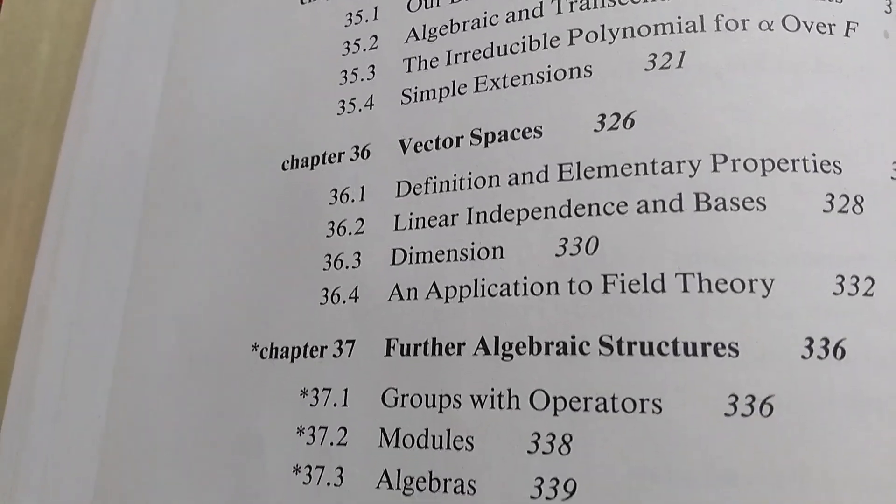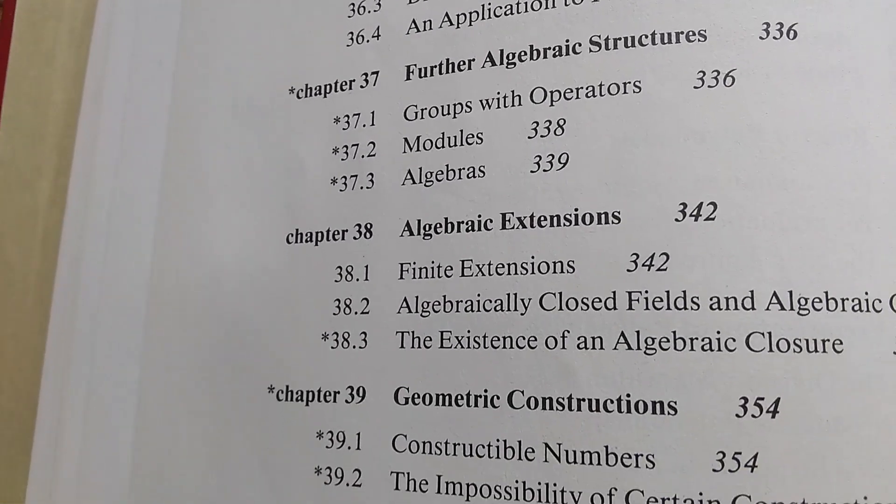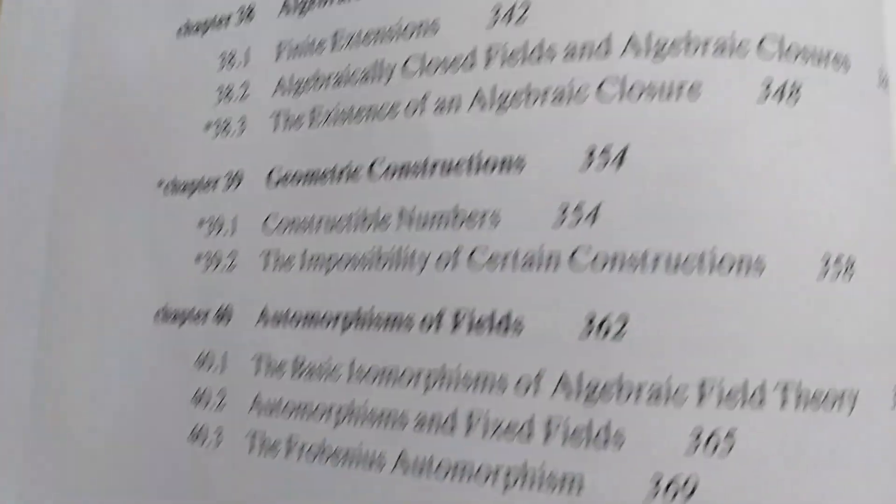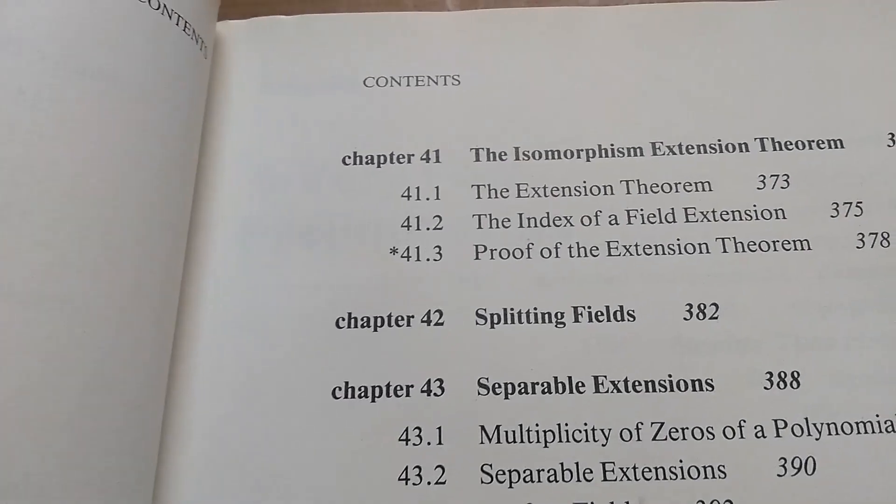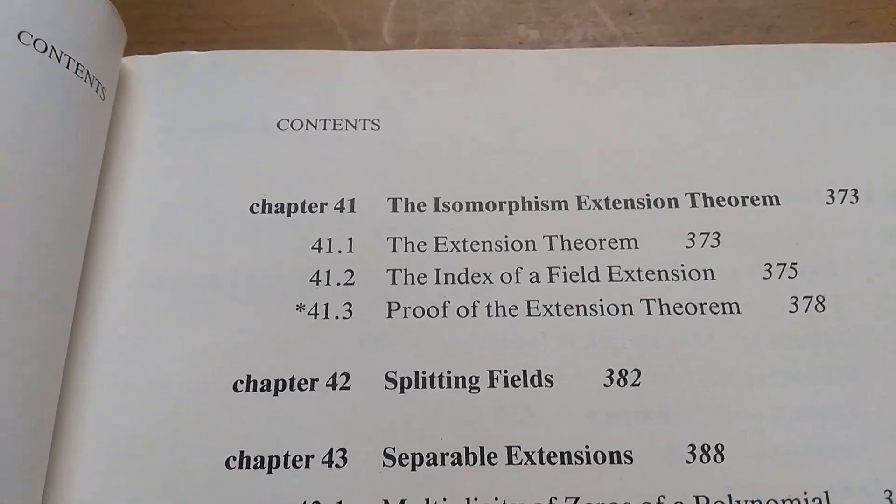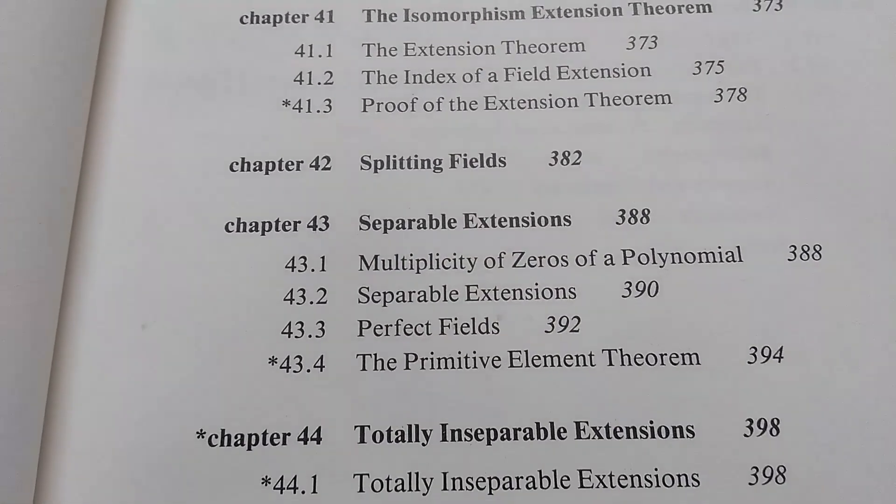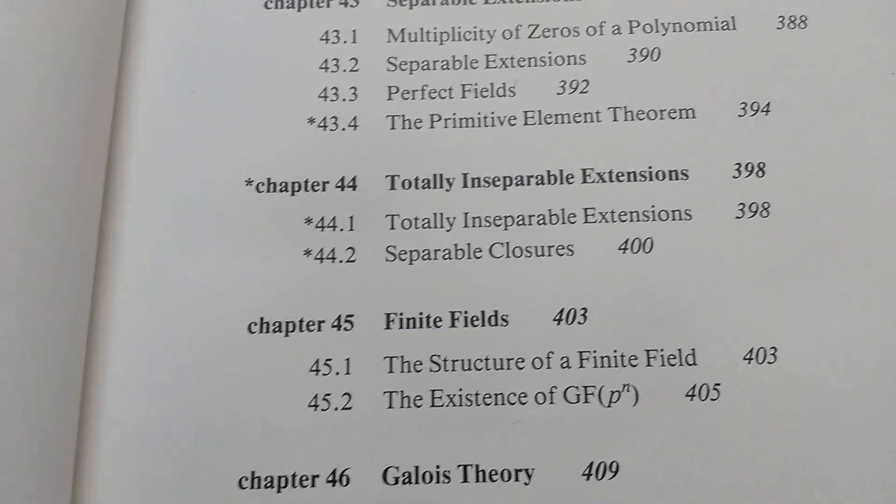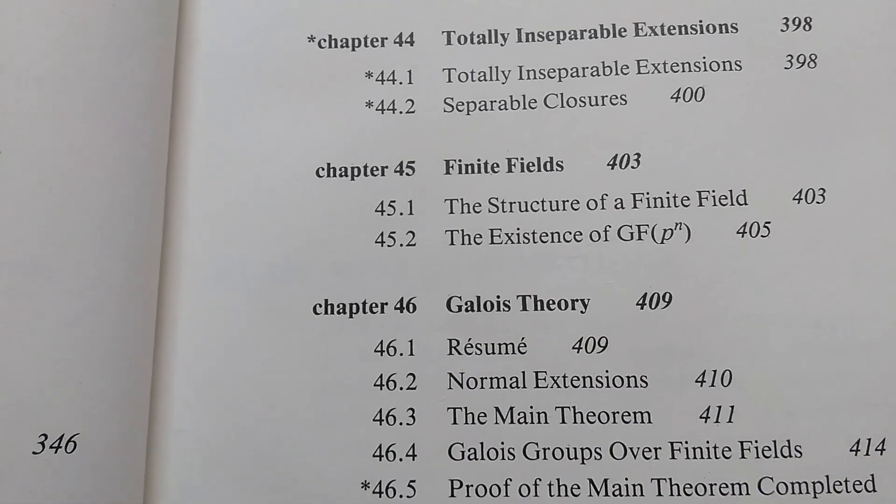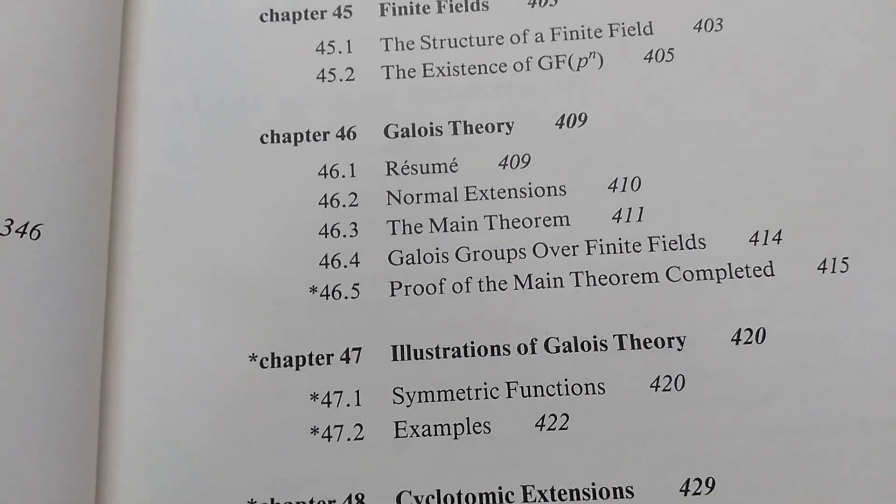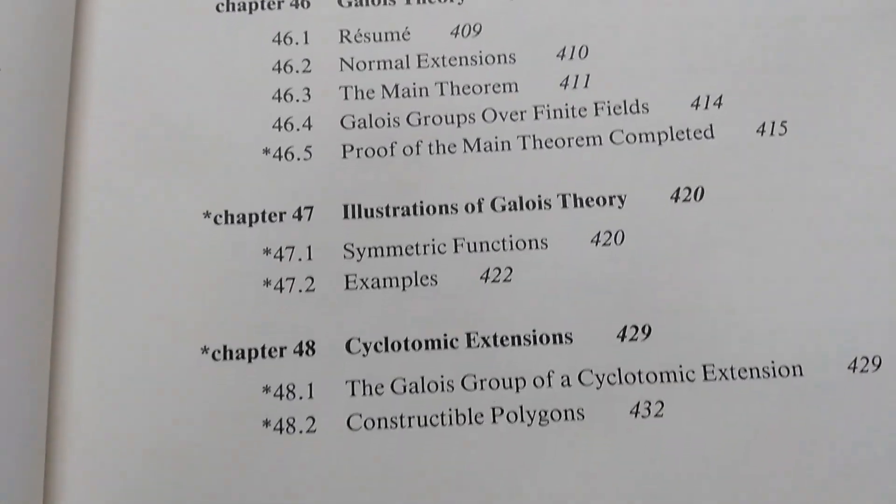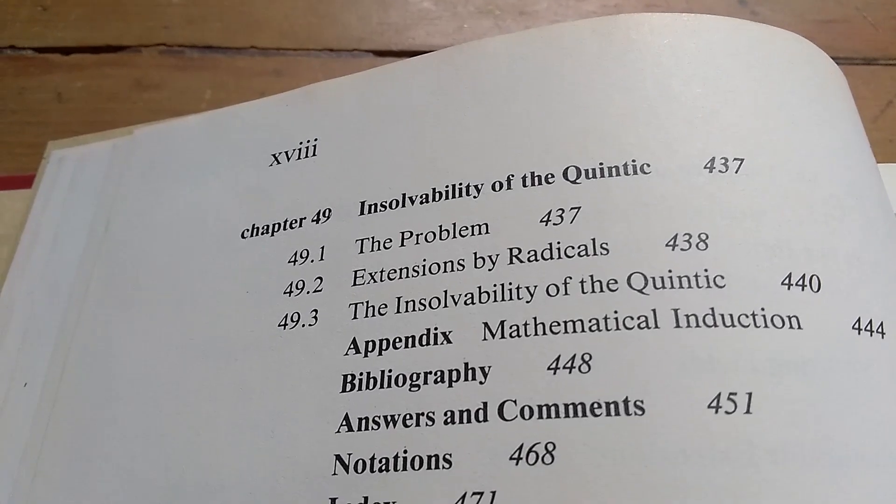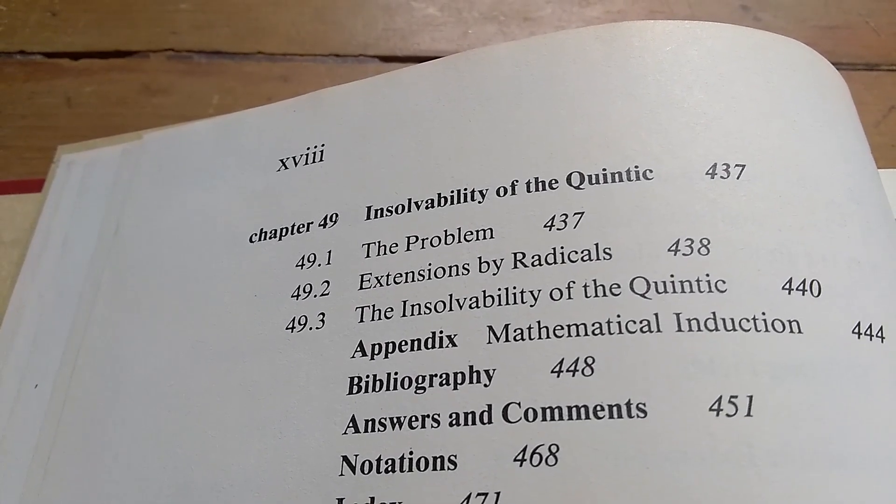Vector spaces, further algebraic structures, algebraic extensions, some geometric constructions, automorphisms of fields. Now the sections are quite small, which is very nice. It makes you feel like you're getting through the book. You don't spend forever on any particular section usually. They're really small sections. I mean, look, finite fields starts at 403, and then Galois theory starts at page 409. And then illustrations at 420, and then 429. So you see it goes through quite quickly. The final chapter is on the insolvability of the quintic.